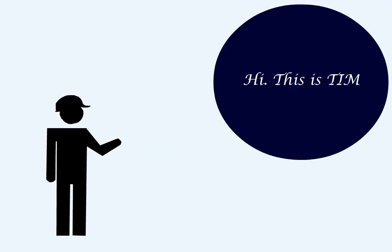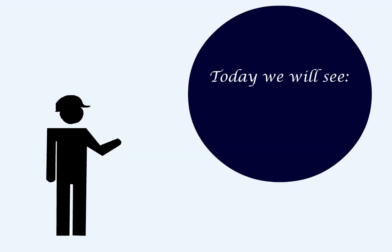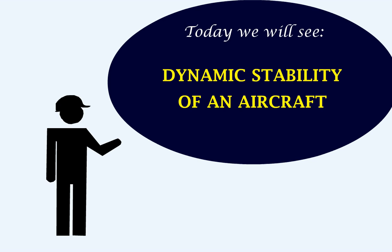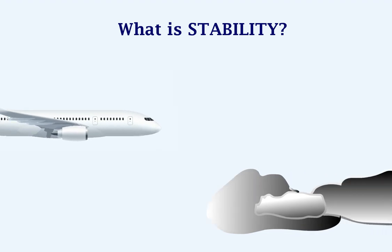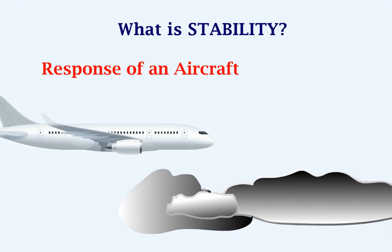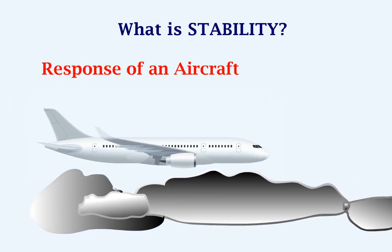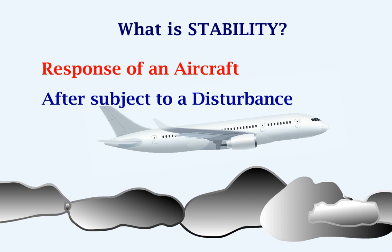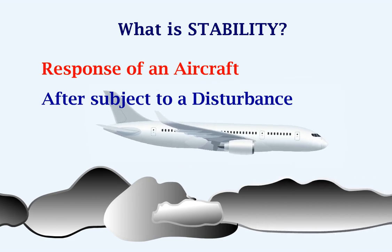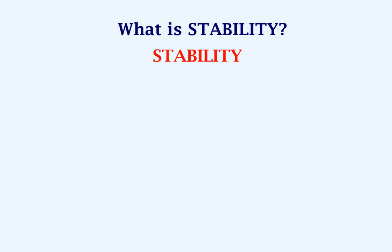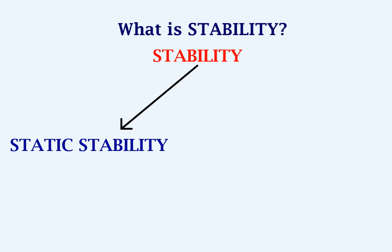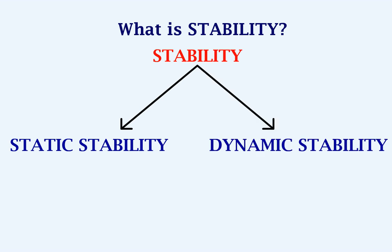Hello, this is Tim. Today we will talk about the dynamic stability of an aircraft. First, let's see what stability is. Stability refers to the response of an aircraft after it is subject to a disturbance. Stability can be classified as static stability and dynamic stability.